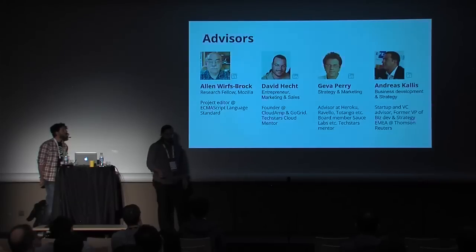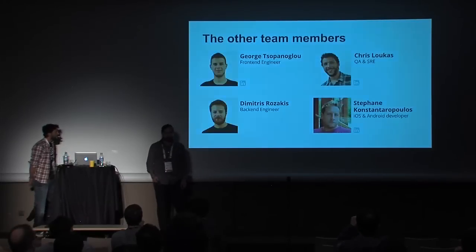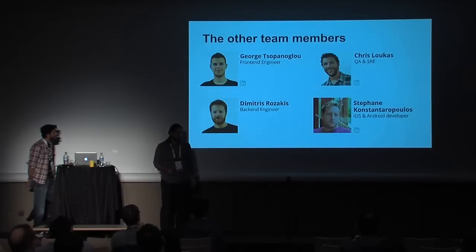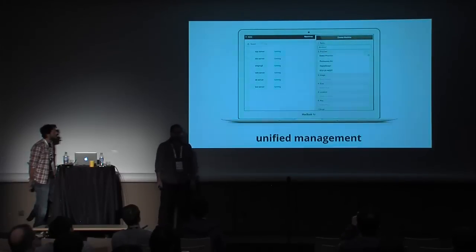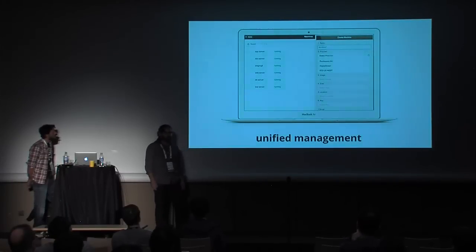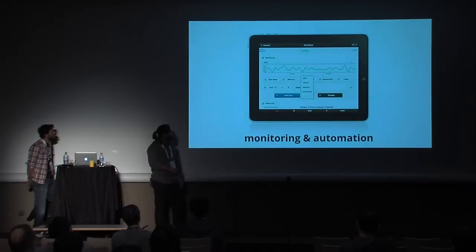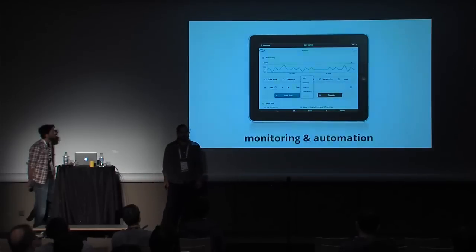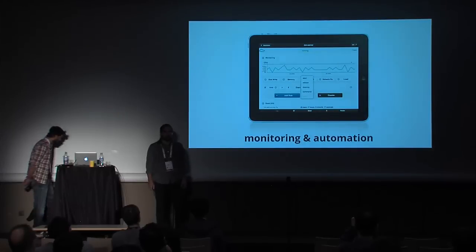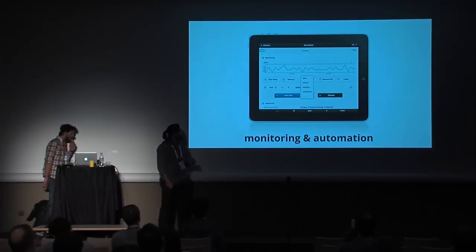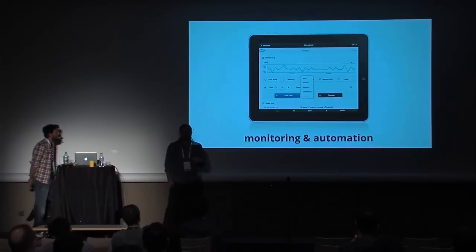We've attracted some world class advisors and recruited a key cast team. And we did all that in order to develop an awesome solution — MIST.io — which provides a unified dashboard supporting the most popular public and private clouds. It will monitor your machines at all times, measuring system metrics, application metrics, and any custom metric you would like. You can configure events that trigger either alerts or automated actions.